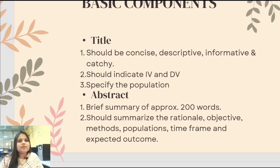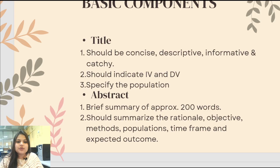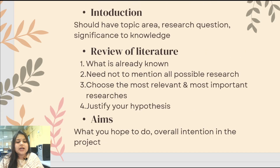You must be wondering how something can be both concise and descriptive and informative. In your title, your independent variable (IV), dependent variable (DV), and population should be clearly mentioned. Then comes the abstract, which is basically a 200 to 300 word summary of your whole project, where you summarize the rationale, objective, method, population, time frame, and expected outcome.